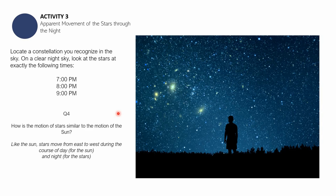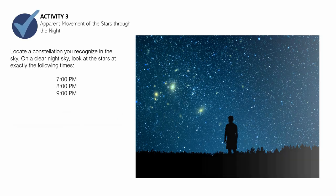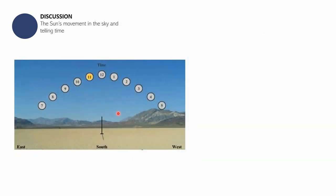How well did you do? I would like you to record your score in the upper right hand corner of your sheet of paper. You have four points to count so I hope that you did get four points. Let's now continue to the next part of this session, which is the sun's movement in the sky and telling time.